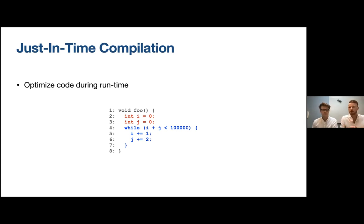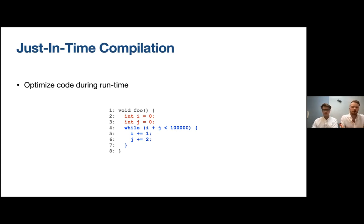This is just how just-in-time compilers work. During runtime they can choose different parts of the program to optimize, and switch between running native code and interpreting some code. For dynamic languages like JavaScript, where types and other information are not available before the program runs, this is the only way of compiling these programs.